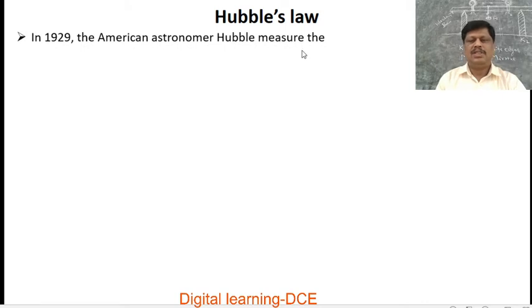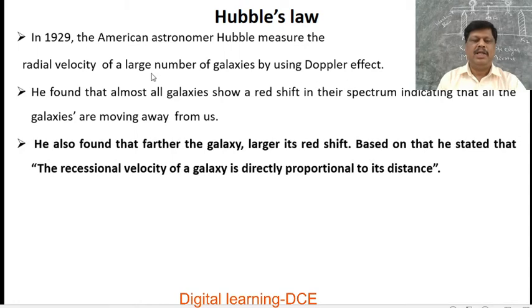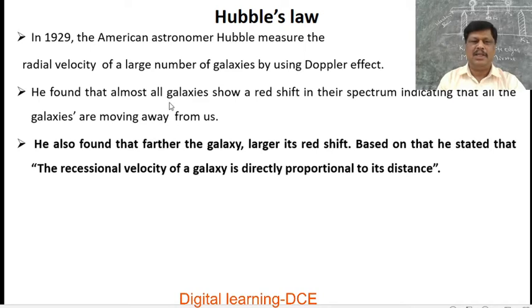Next, what is Hubble's law? In 1929, the American astronomer Hubble measured the radial velocity of a large number of galaxies using Doppler shift. He found that almost all galaxies show a redshift in their spectrum, indicating that all galaxies are moving away from us. The redshift means the spectral lines are shifted towards the longer wavelength side, meaning the objects are receding away from us. He also found that the farther the galaxy, the larger its redshift. Based on that, he stated that the recessional velocity of a galaxy is directly proportional to its distance.